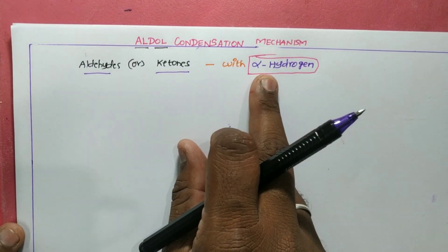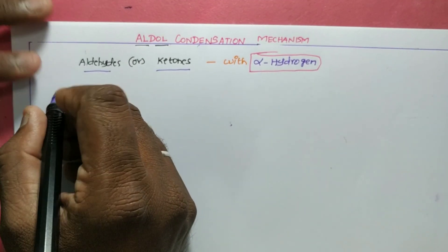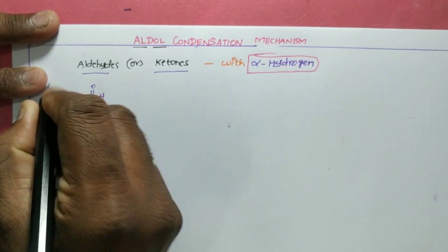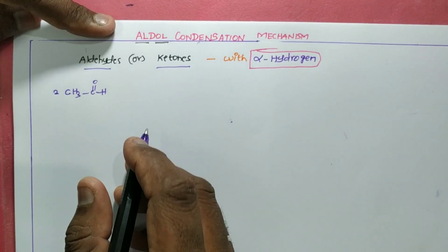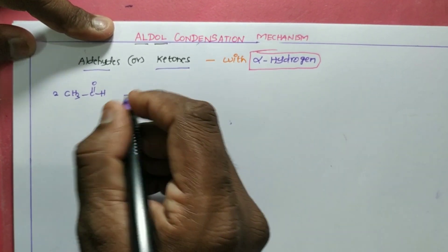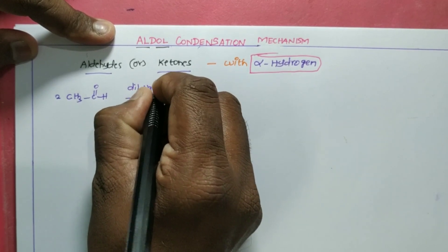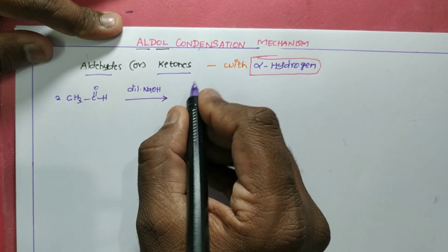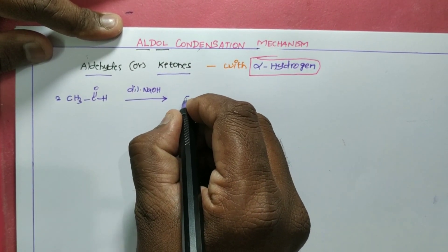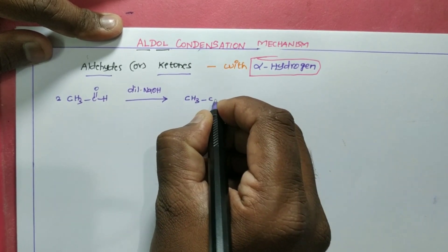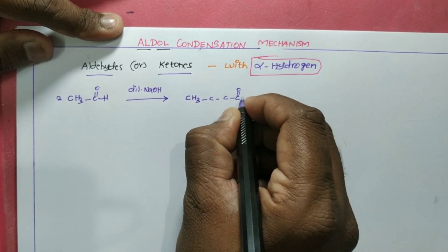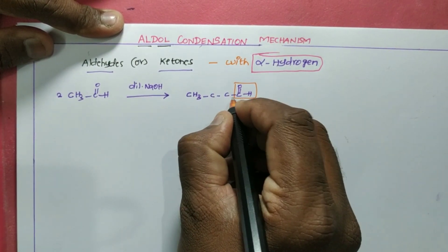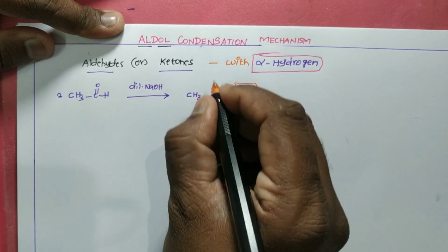For example, taking two molecules of CH₃CHO — acetaldehyde or ethanal — reacting in the presence of a dilute base like dilute NaOH, I'll be getting a beta hydroxy aldehyde as a product. That product is CH₃-CH(OH)-CH₂-CHO, where in the beta position there is an OH group.